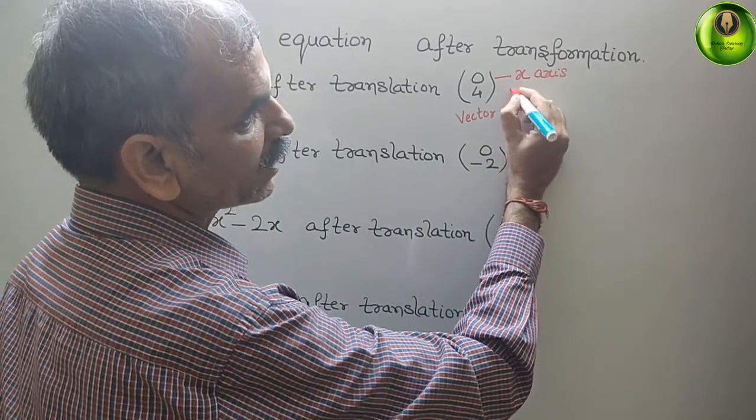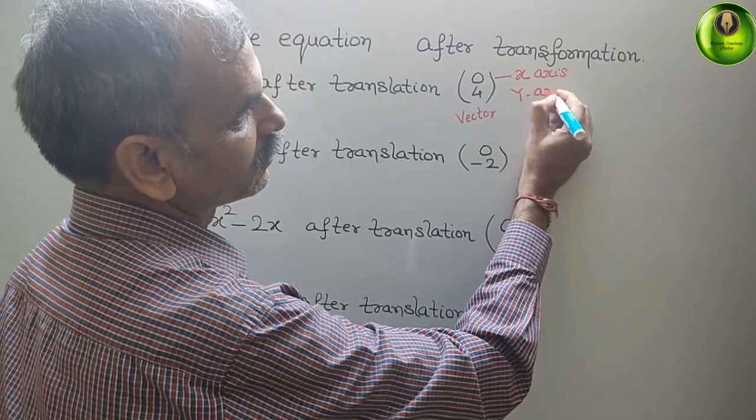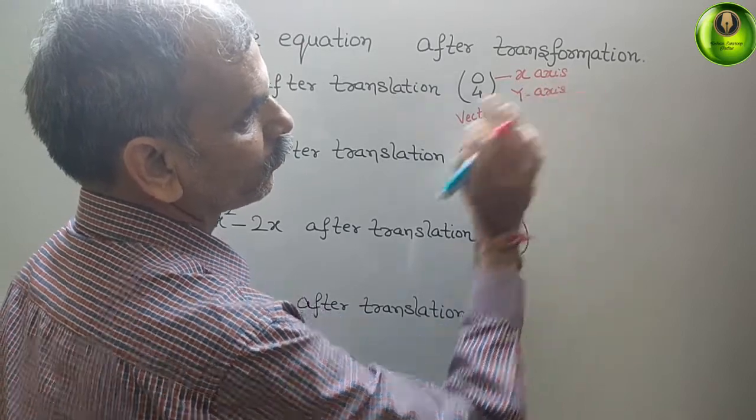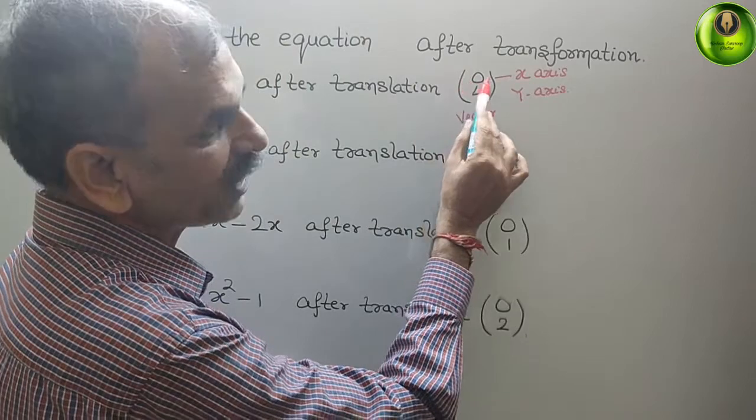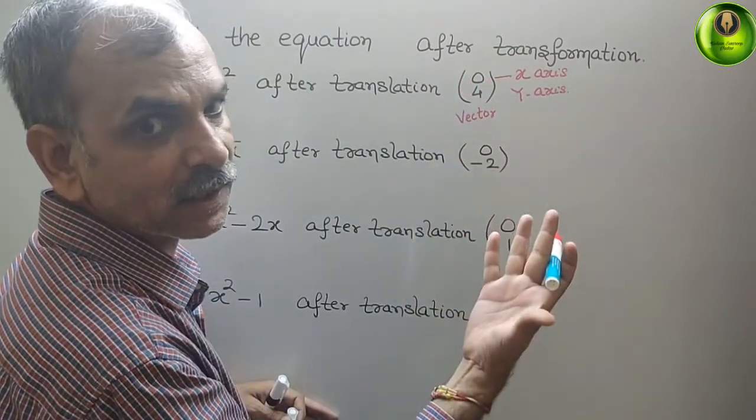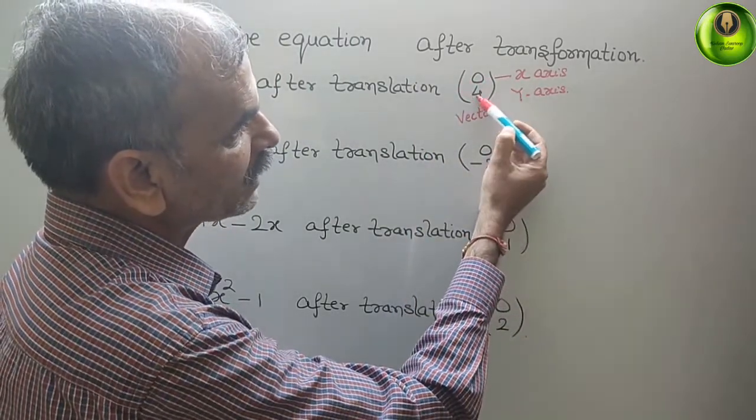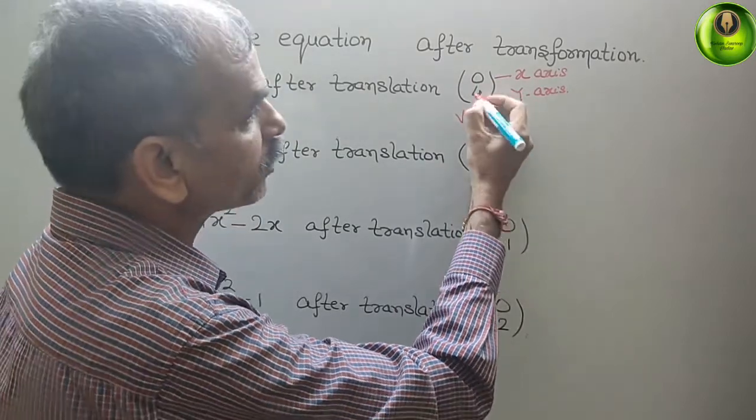And the lower part indicates y-axis. That means here, what is the shifting in x-axis? Nothing is there. And what here, y, you can see 4 is there. That means plus 4.